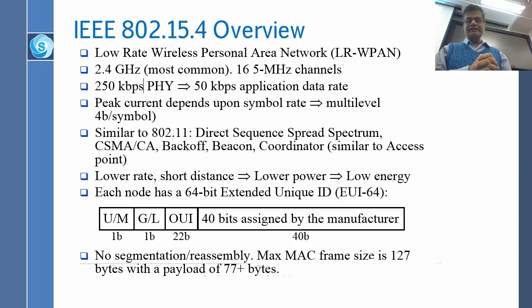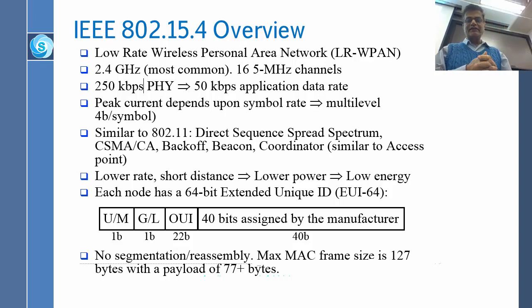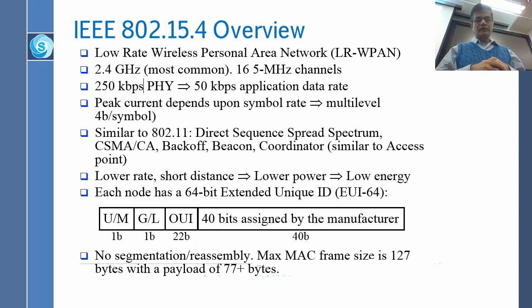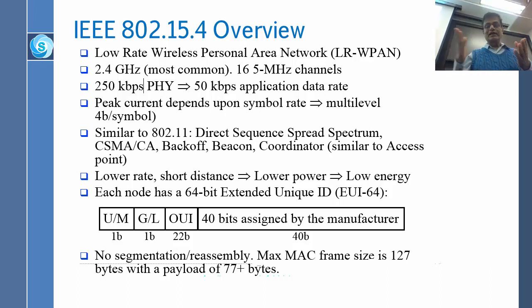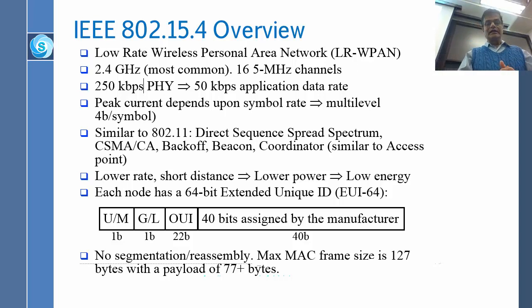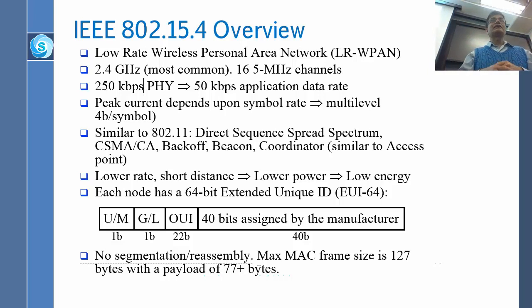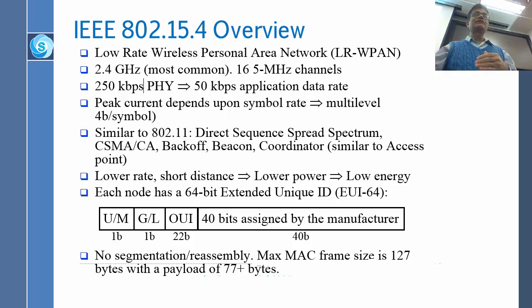No segmentation or reassembly, simply because of simplicity. The MAC frame size is 127 bytes — very small frames — with a payload of 77 bytes. Out of 127 bytes, about 50 are gone in the headers, and you are left with 77 bytes. So very small packets, and that is by design — that is what we need for small devices like sensor networks. However, that will cause a lot of problems as we will see later on.